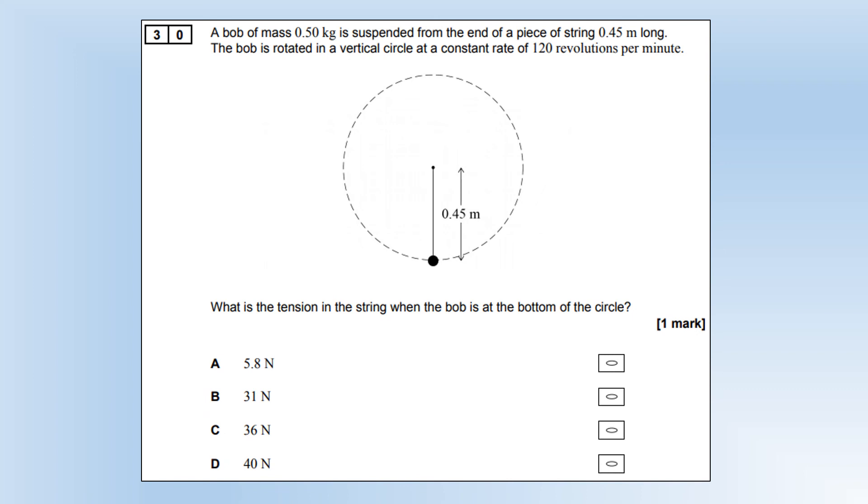A ball of mass 0.5 kilograms is suspended on the end of a piece of string 0.45 meters long, and it's going at 120 revolutions per minute. What is the tension? The tension has to be equal to the weight force plus the centripetal force required. We can calculate the angular speed by working out the revolutions per second and multiplying it by 2 pi, plug the numbers in, and we end up with 40 newtons.